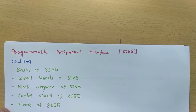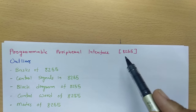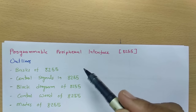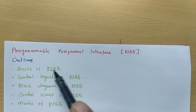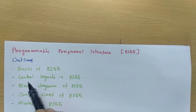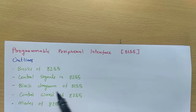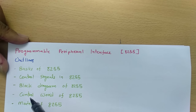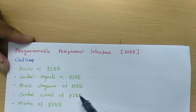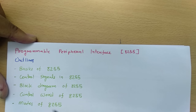Welcome to the microprocessor and interfacing playlist. In this session, I will be explaining Programmable Peripheral Interface IC 8255. These are my session outlines: first I will explain basics of 8255, then control signals in 8255, then the block diagram of 8255, then the control word of 8255, and finally the modes of operation in 8255.